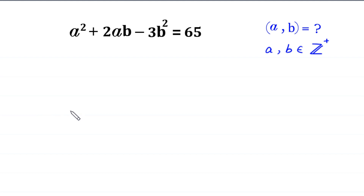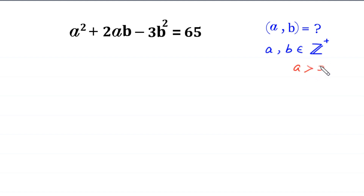Hello, welcome to how to solve this very nice algebra equation. a squared plus 2ab minus 3b squared is equal to 65. We need to find all possible values of a and b, where a and b are positive integers, meaning a is greater than 0 and b is greater than 0.